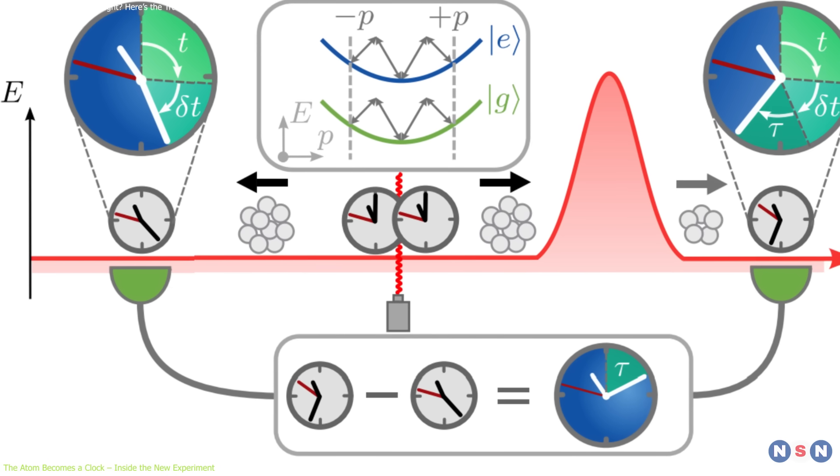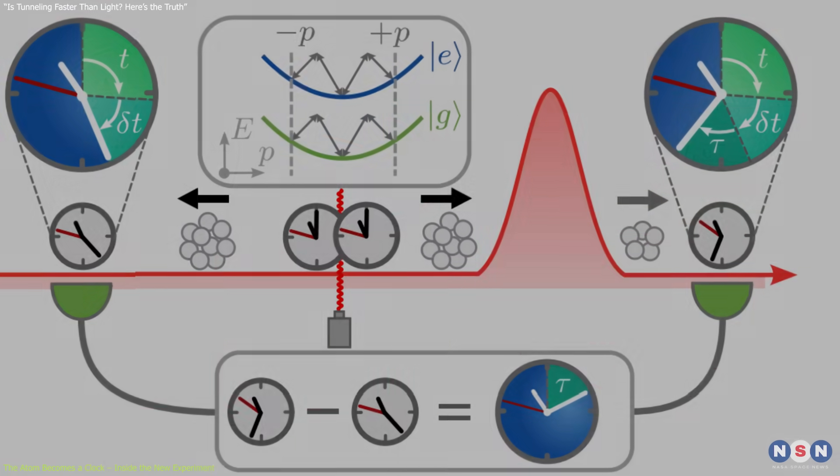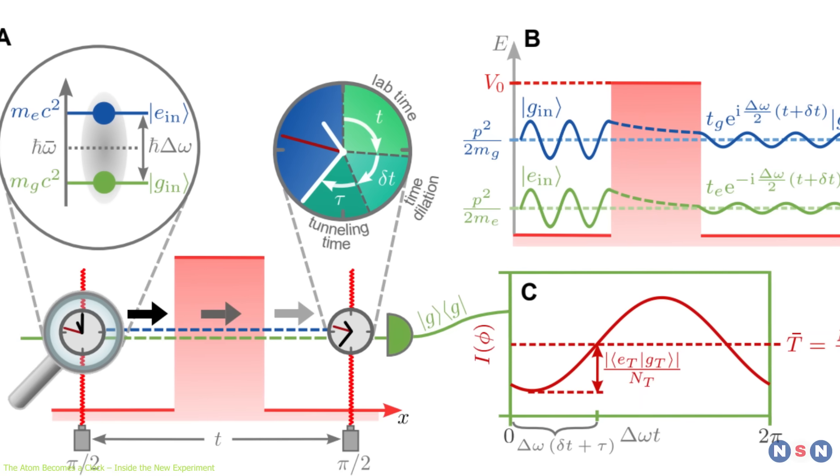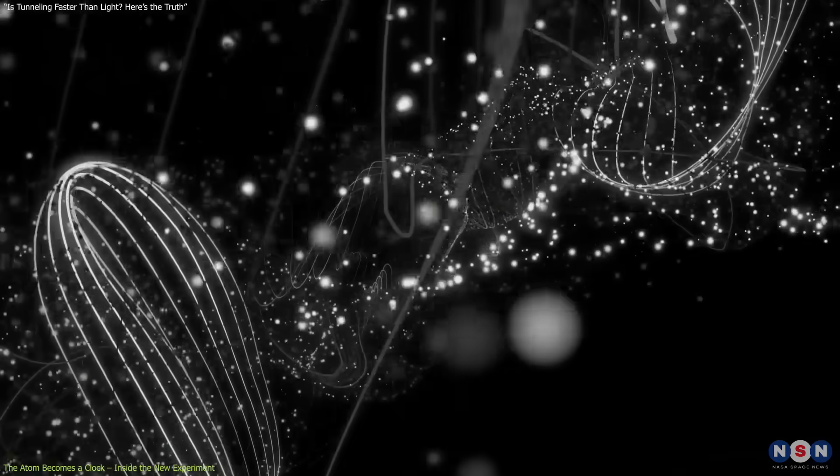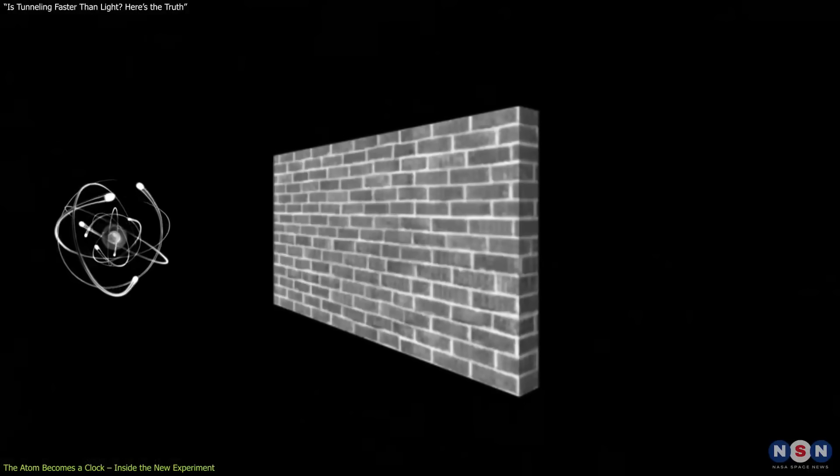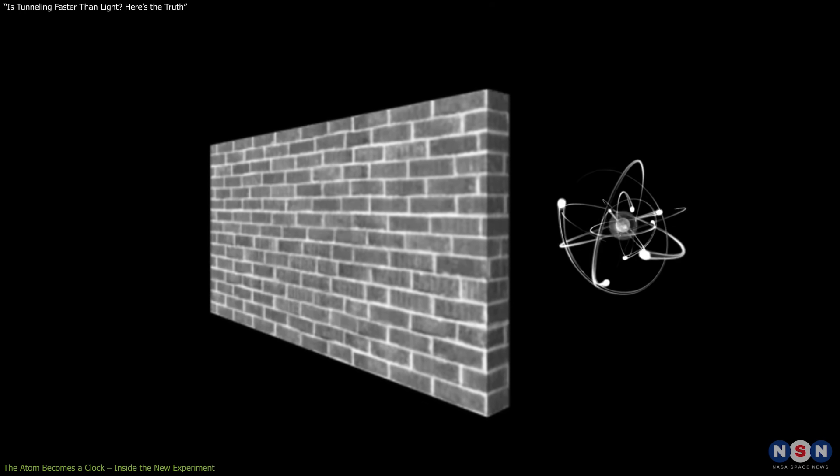Ultimately, the Ramsey clock technique offers a clean, relativistic compatible, and experimentally feasible way to observe time during quantum tunneling. It respects the probabilistic nature of quantum mechanics while bringing rigorous operational clarity to one of its most enigmatic behaviors.